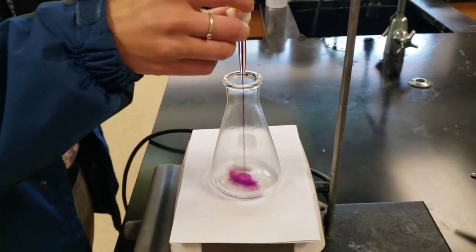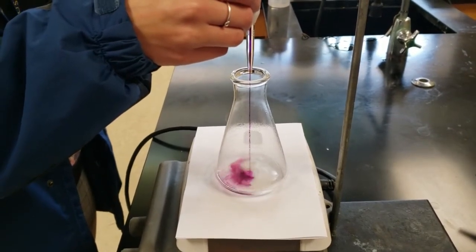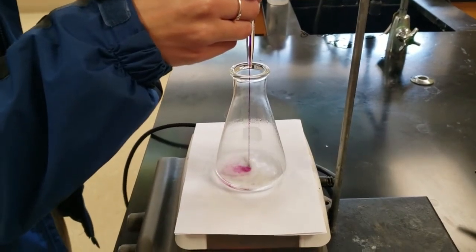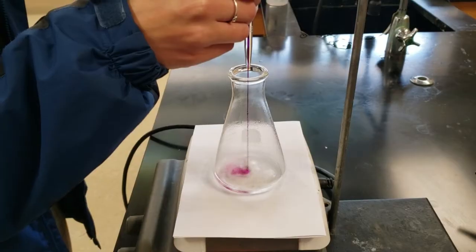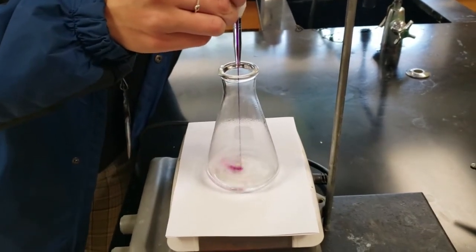If we keep adding the permanganate and it reacts, then we have an excess of the peroxide. If we have the permanganate persisting, then we have an excess of the permanganate. If we can make it so one drop changes it, then that's where we want to be.